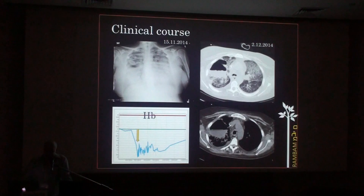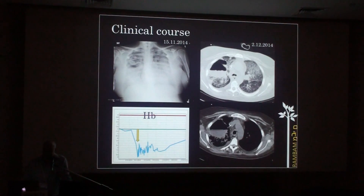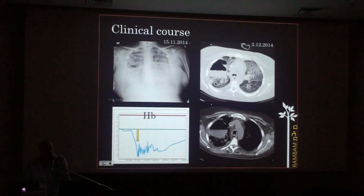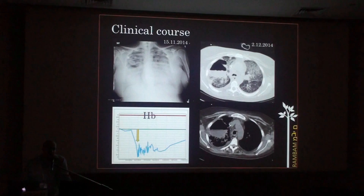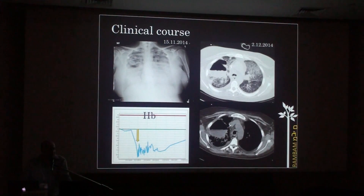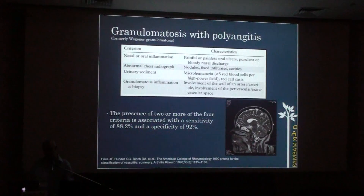A CT done during the hospitalization, once she was intubated, shows that the lesion we saw in the right lung became fully cavitated with a fluid level. The reticular opacities represent the residual findings of the diffuse alveolar hemorrhage that had occurred two weeks before.